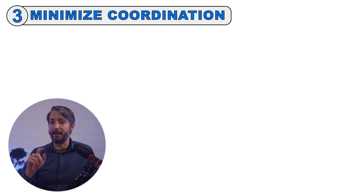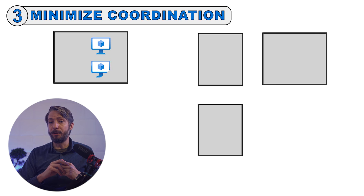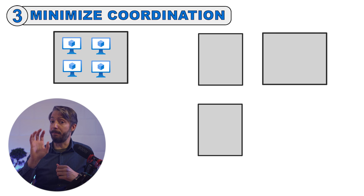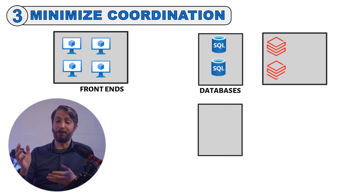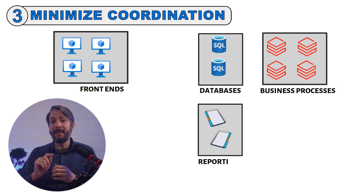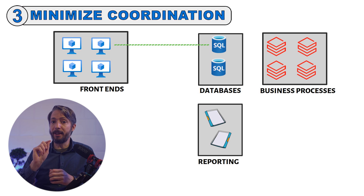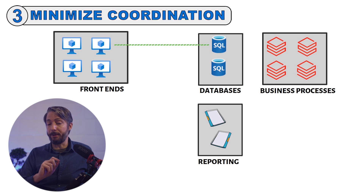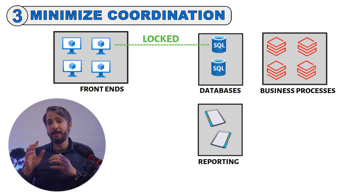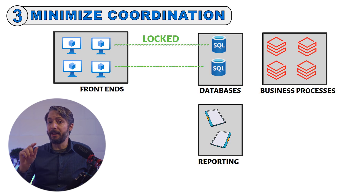Moving further along to the third point: minimize coordination. Most cloud applications consist of multiple application services, such as web front-end, databases, business processes, reporting, and more. To achieve scalability, each of these services should run on multiple instances. If you have two nodes that need to update a database table, consideration has to be taken as to how this is handled — is there a lock when the first node updates the table? Scaling the nodes horizontally by adding extra nodes may not provide the expected benefits if updating the tables is locked by a node.